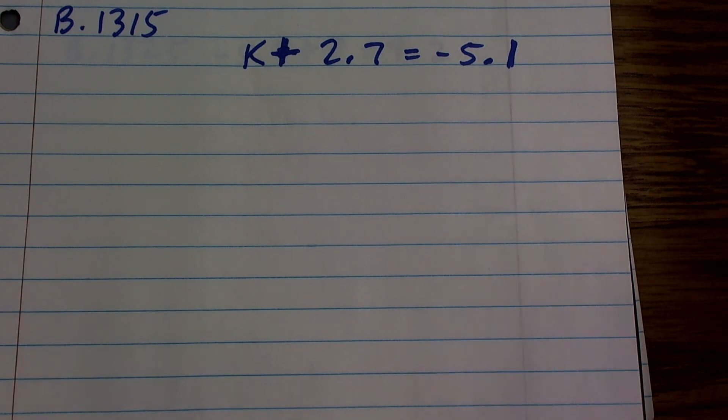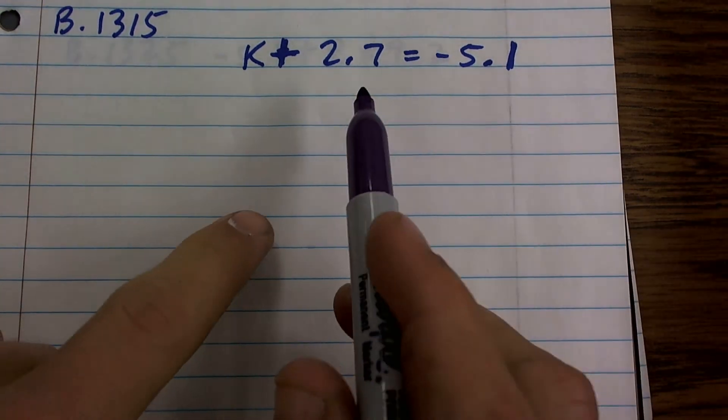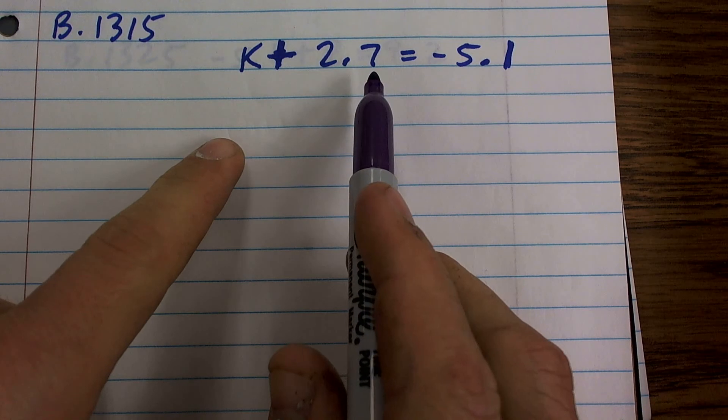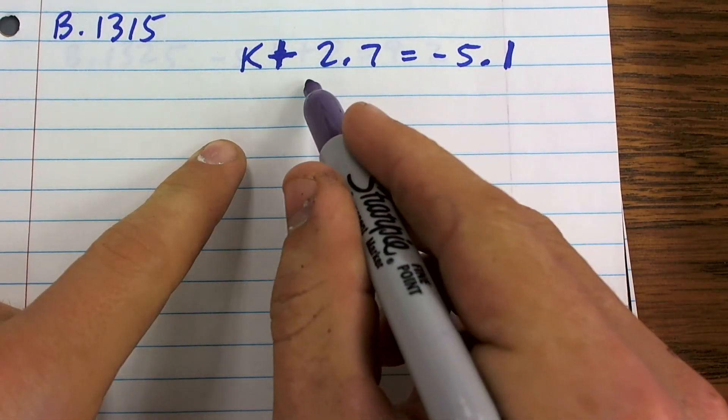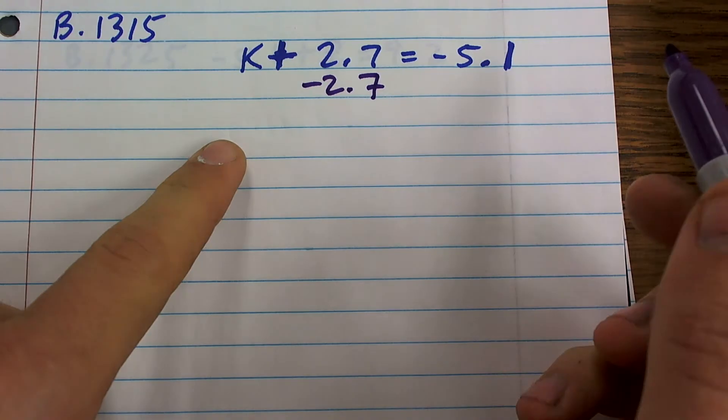So what we want to do here, remember, is we just want to isolate our variable. So we want to undo what's happening to our variable. So here I have k plus 2.7. Well, the inverse operation of adding 2.7 would be to subtract 2.7.